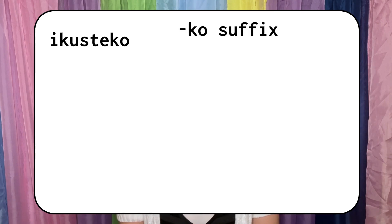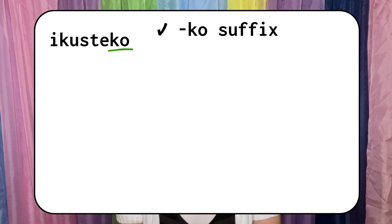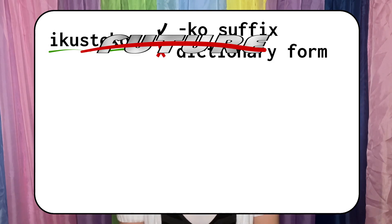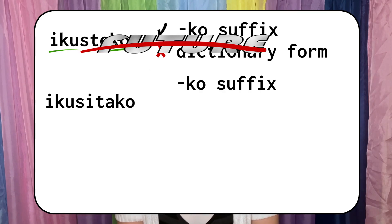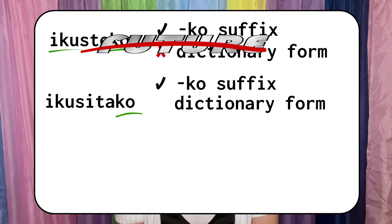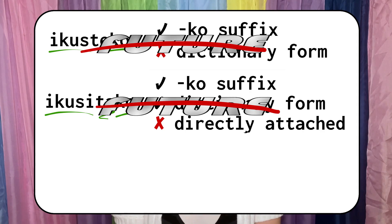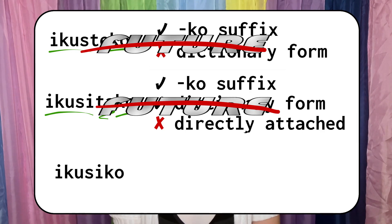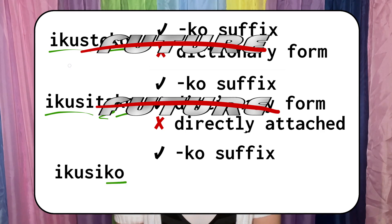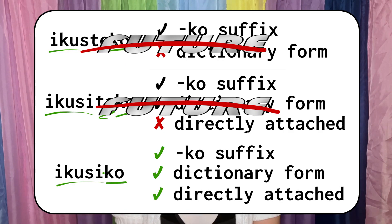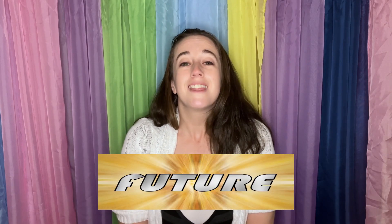Ikushite ko — ko suffix? Check. Dictionary form ikushi? Check. But not directly attached, so not the future tense. Ikushitako — ko suffix? Check. Dictionary form ikushi? Check. Directly attached? No. So, not future tense. Ikushiko — ko suffix? Check. Dictionary form ikushi? Check. Directly attached? Check. Future form unlocked.